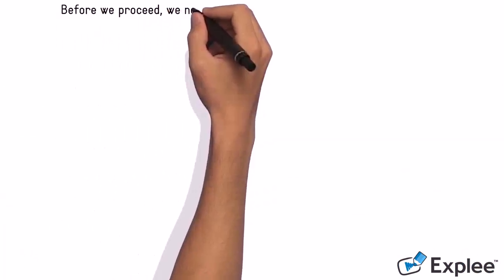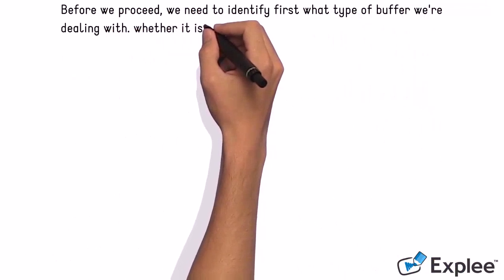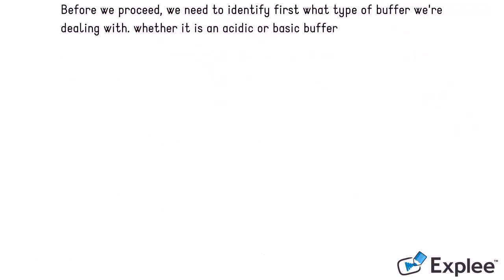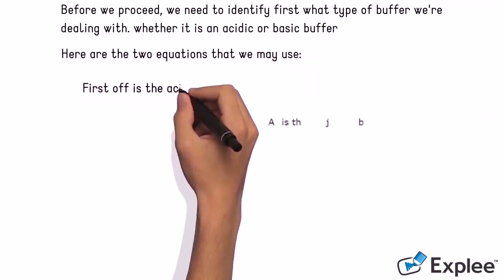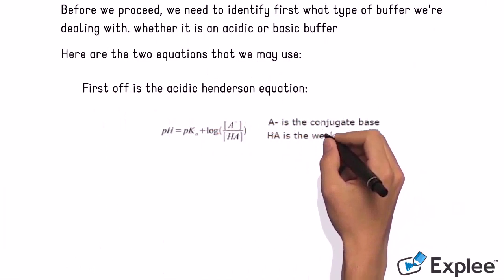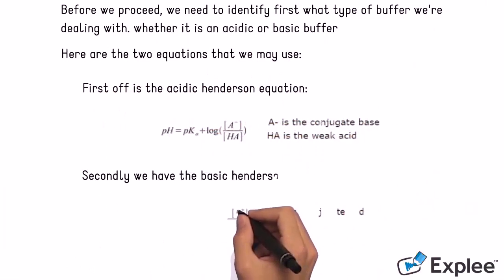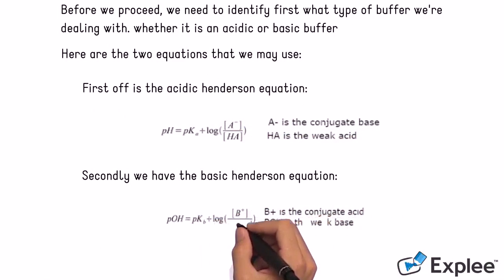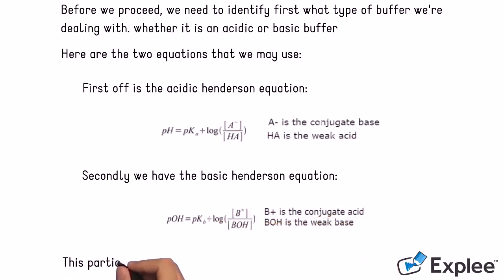Before we proceed, we need to identify first what type of buffer we're dealing with, whether it is an acidic or basic buffer. Here are the two equations that we may use. First off is the acidic Henderson equation. Secondly, we have the basic Henderson equation. This particular solution happens to be an acidic buffer.